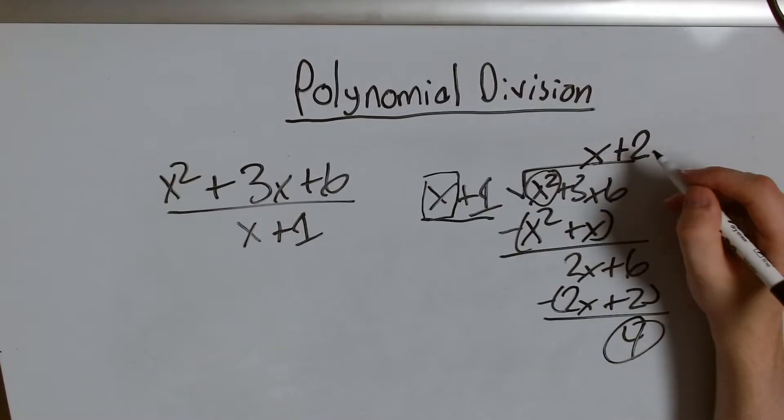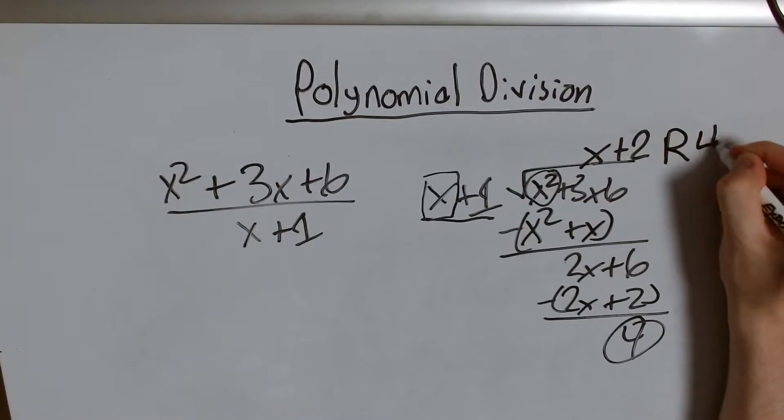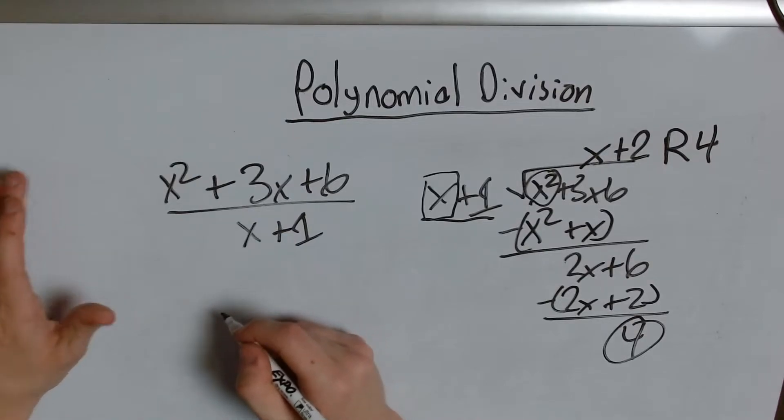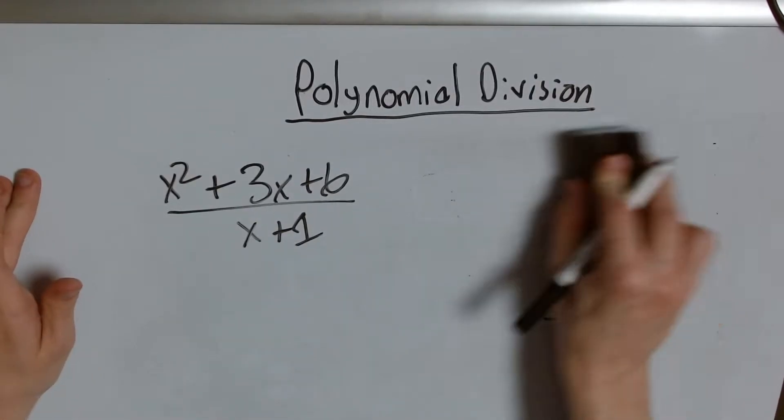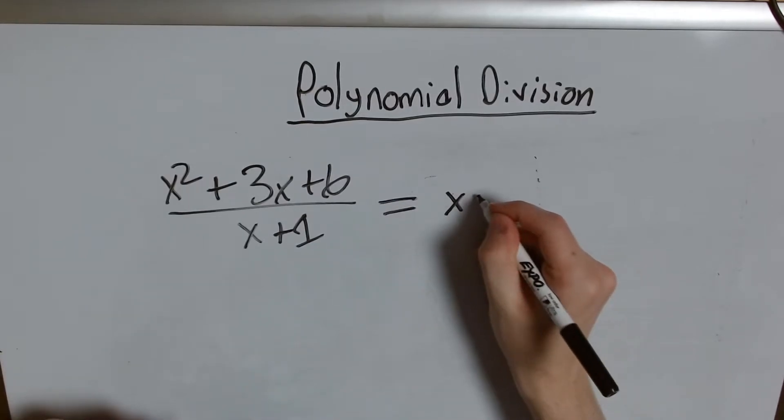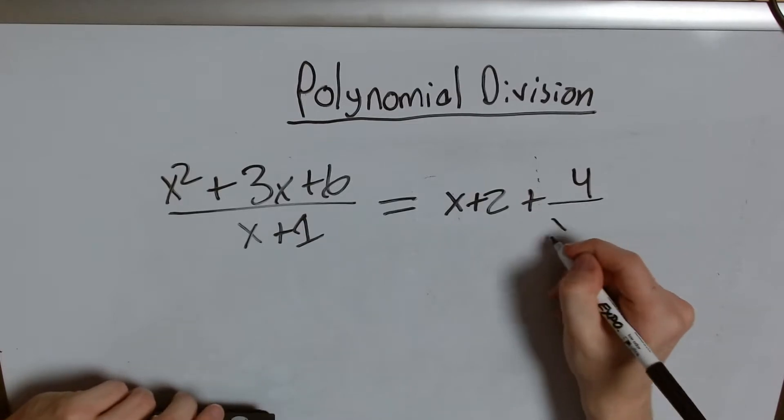We represent this by just saying r short for remainder 4. Now our answer to this question in algebraic terms we would say that this whole thing is equal to x plus 2 plus 4 over x plus 1.